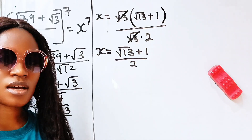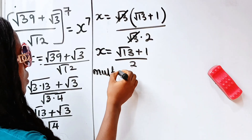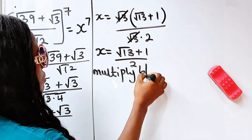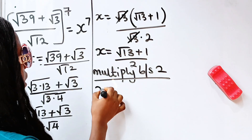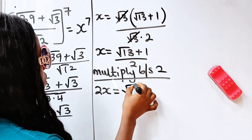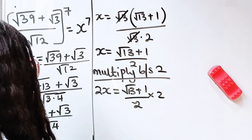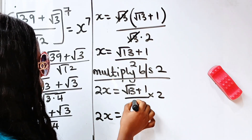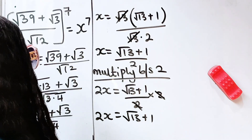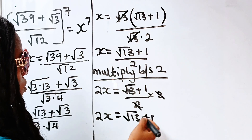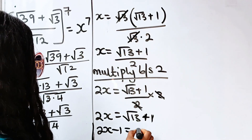Remember that our intention is to get x squared. So let's multiply both sides by 2. We have 2x is equal to square root of 13 plus 1. Now transfer plus 1 to the left side, so we have 2x minus 1 is equal to square root of 13.